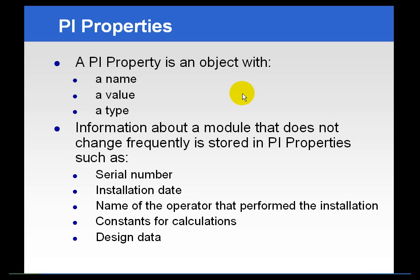Properties associated in the module database with a module are designed to associate some sort of constant or infrequently changing value to a specific module. The property can be any data type — numerical, strings, booleans — and literally anything you can associate as a PI Property. Some examples shown on the screen include the serial number of a particular piece of equipment, its installation date, the name of the operator or technician that performed the installation, or the manufacturer of that equipment. You can store constants for calculations, design data — any sort of information you want associated with that particular module that you want your users to be able to access.